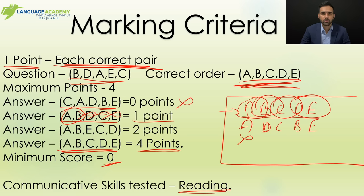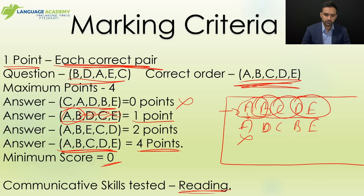In reading you only have an overall time — you don't have one, two, or three minutes specifically for reorder paragraphs. You have an overall time of 32 to 41 minutes to attempt around 16 to 20 questions. I recommend spending a maximum of two and a half minutes on each reorder paragraph. If you go over that, you'll struggle to finish your reading section. I'll also tell you Strategy Number Two — what to do if you can't solve a reorder paragraph in time.